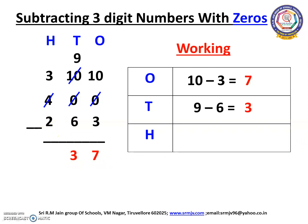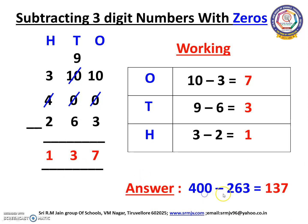Now we are going to do the 100's place. Here we have 3 and 2. We can subtract 2 from 3. Open your fingers children. 2 after 3. How many fingers have you opened? We have opened 1 finger. So we have to write 1 here. The difference between 400 and 263 is 137.